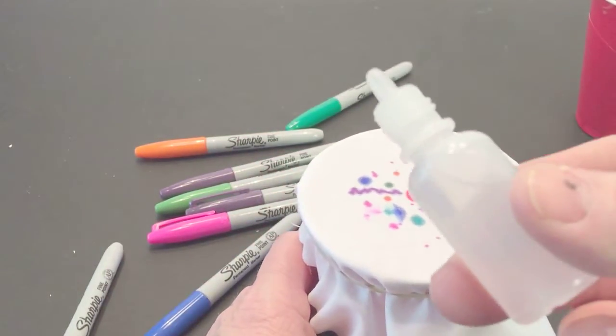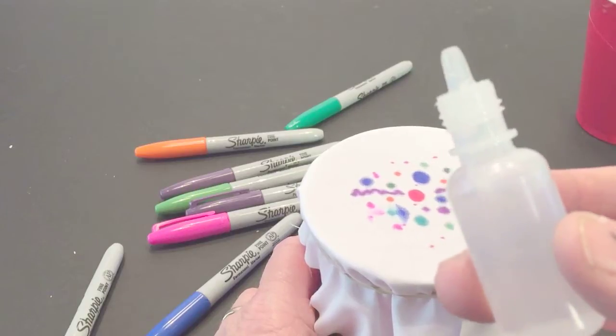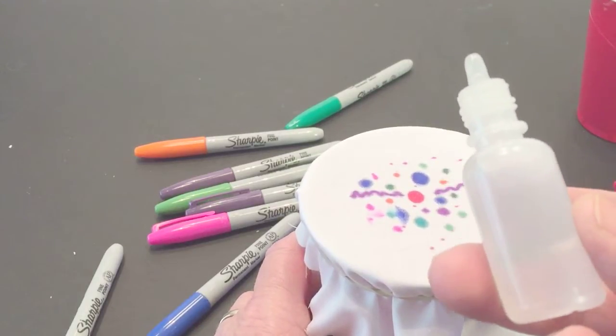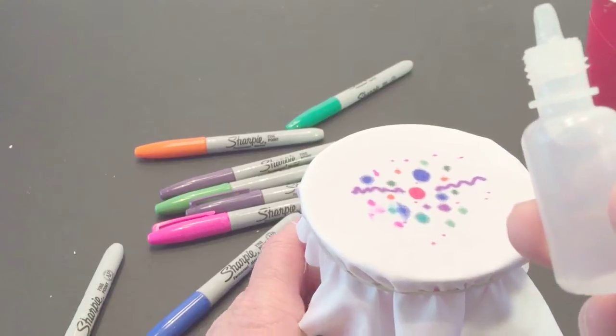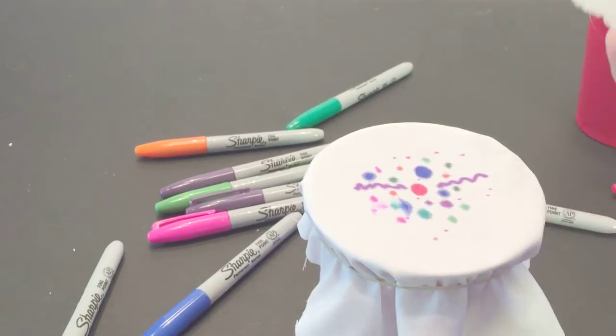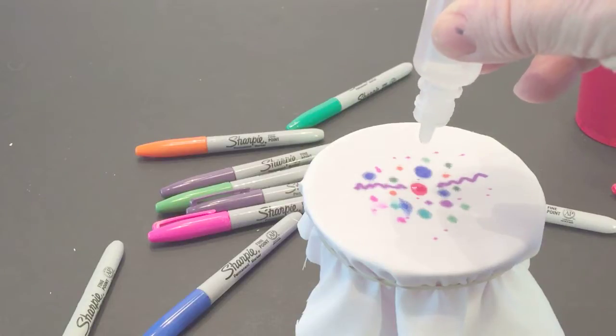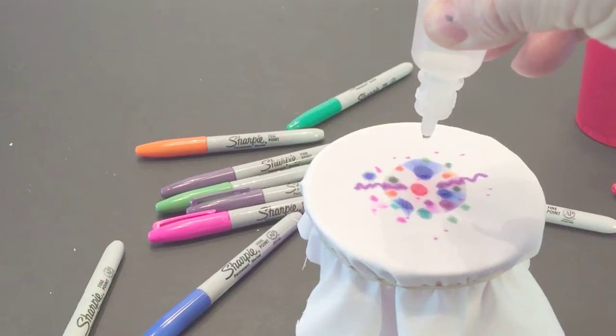Then we're going to take our rubbing alcohol we have in our dropper here. You can use an eye dropper. I order these online—I'll have it in the description where you can get some of these poor pipettes.